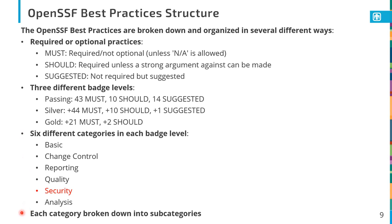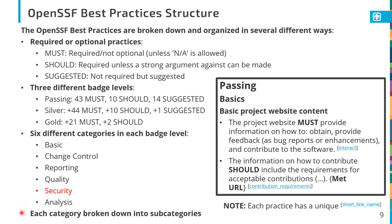Within the three different badge levels, the practices are broken down into six different categories — of which security is only one — and then each category is broken down into one or more subcategories. Each practice has a unique short identifier name that is unambiguous, and that short identifier is also a link to the website that defines the practice, so you can provide web links to these things by just putting in that short link name.